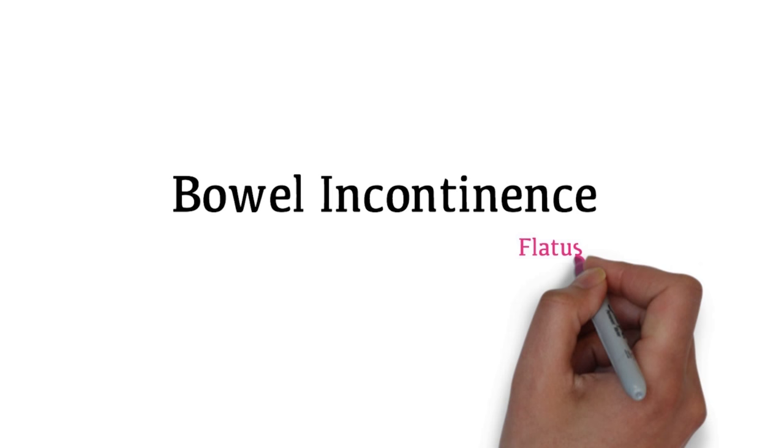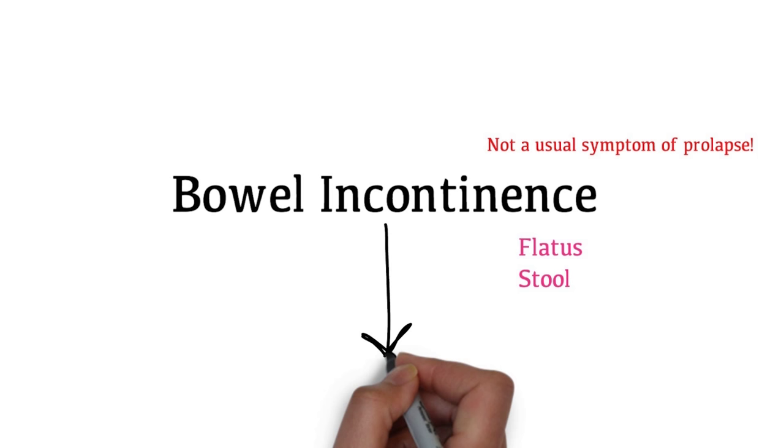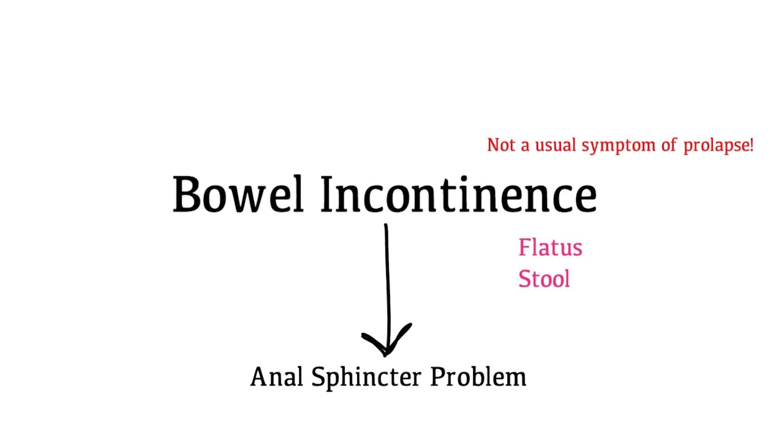Patients may also experience incontinence of flatus or stool. This is not a usual symptom of prolapse. It is usually due to a structural or neurological problem with the internal or external anal sphincter.